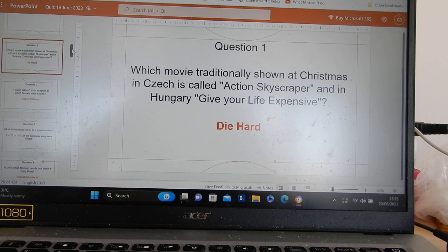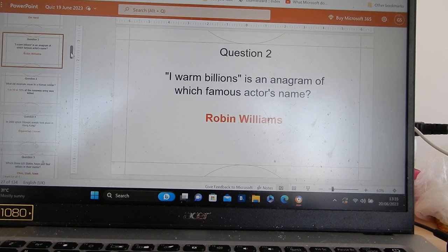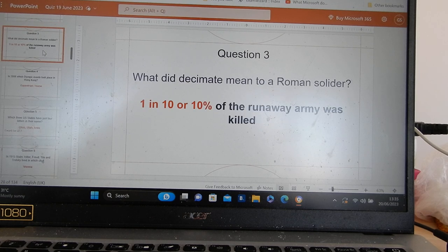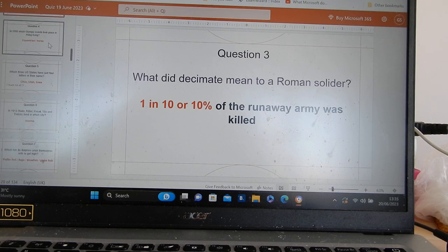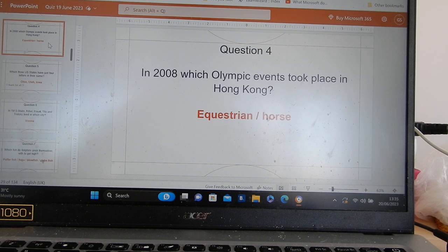It's Die Hard! Robin Williams! 1 in 10 or 10% of the runaway army was killed. Yes, you don't want to kill the whole army. You need it. You're in trouble.